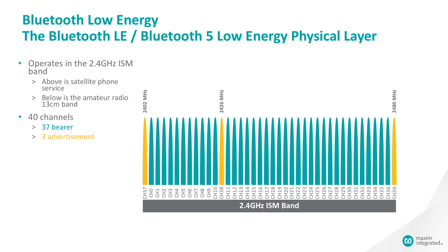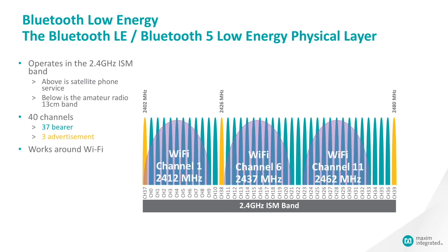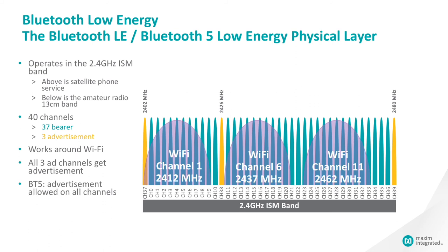Three channels at 2402 MHz, 2426 MHz, and 2480 MHz are called advertisement channels. When a BLE device needs to connect, it will transmit its identity and capabilities on these three channels until it is discovered. Why these frequencies? Mostly to work around Wi-Fi. Most Wi-Fi routers operate on channels 1, 6, and 11 because those are the only three Wi-Fi channels that don't overlap each other. A BLE device wishing to be discovered will transmit an advertisement on all three channels, and once discovered, the stations switch to a bearer channel and begin the frequency-hopping regimen. Note that BLE 5 allows advertisements to be transmitted on any or all of the 40 channels, but it risks not being found by older equipment.